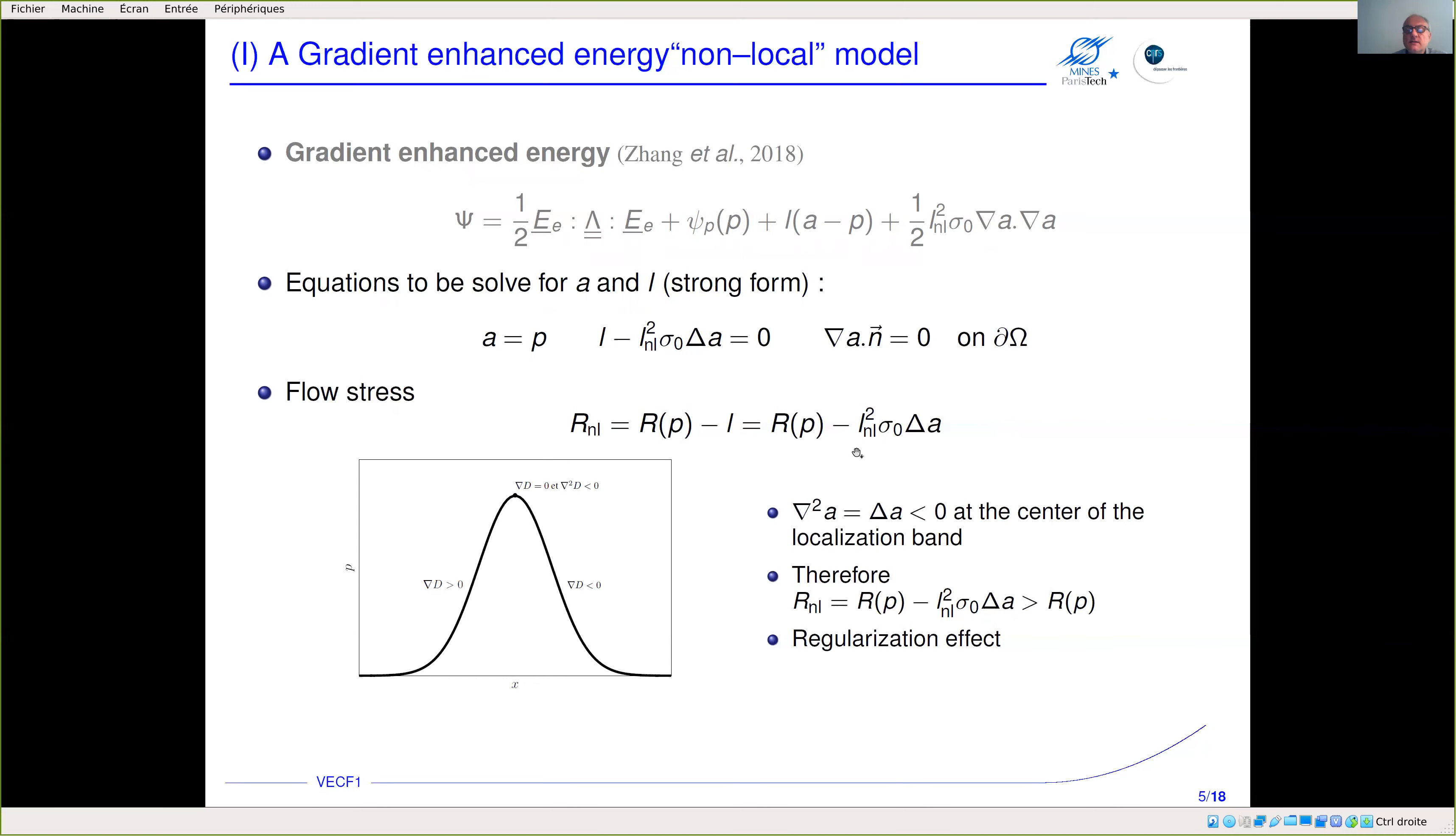The flow stress in this non-local formulation is the standard flow stress minus a corrective term which depends on the Laplacian of a. If you have a localization band at the center where plastic strain is maximum, the Laplacian is negative, which means this term is positive because of the minus sign. Therefore the flow stress in the non-local sense is always higher than the standard flow stress, and this induces a regularization effect.